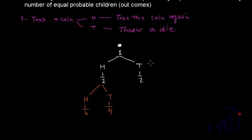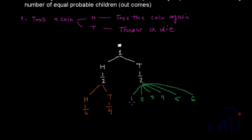If we get a tail in the first step we throw a dice, and when we throw a dice we can get 1, 2, 3, 4, 5, or 6 — total 6 outcomes. So the probability of each one of them will be one sixth of the probability of the parent node. The probability at the parent node is half, so the probability of getting a 1 when you throw the dice is 1 sixth of half, that is 1 by 12. Similarly the probability of getting a 2 will also be 1 by 12, and all of these will have probability 1 by 12.